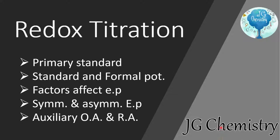Hello guys, welcome back to JG Chemistry. This is our second video on redox titration. In the previous video we learned about the Nernst equation, how to write the half-cell reaction, calculation of redox potential, cell potential, and free energy. In this video we are going to learn about primary standards, formal potential, factors affecting the equivalence point, how to find symmetrical and asymmetrical equivalence point, and what is the use of auxiliary oxidizing and reducing agents.